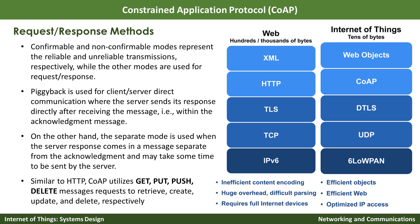The problem with traditional HTTP is inefficient content encoding. When browsing HTTP on high-powered computers, servers, and laptops, we don't worry about content encoding — but it results in a huge overhead, is difficult to parse, and requires full internet devices. In CoAP, there are efficient objects and efficient web design. They use UDP, which is lightweight, and also use 6LoWPAN, which is a low-power optimized IP-based network. You can think of CoAP as a counterpart of HTTP but designed for resource-constrained IP-based IoT devices.